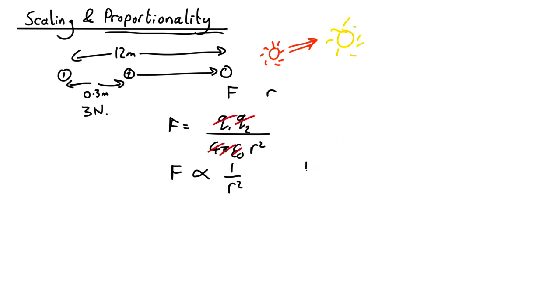That's the same thing as saying that force equals some unknown constant times one over r squared. In this particular case that constant is q1 q2 over four pi epsilon naught. But we don't normally care what that constant is. All we care about is what the proportionality is. So that's how we work out proportionality.